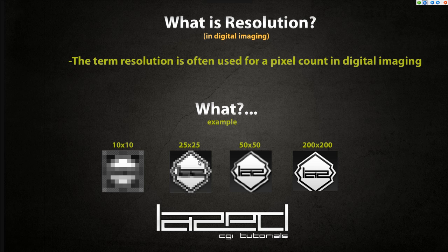Pixelated is a term they use when you can start to see the pixels and it looks fairly ugly — it's not a good look in graphics. So you want to keep your resolution really high so that your image does not become pixelated and looks as clean as possible. If I turn my resolution up to 50 pixels by 50 pixels, my logo becomes fairly sharp, more visible, cleaner and nicer — you can hardly see the pixels. And then if I increase my resolution to 200 by 200 pixels, my image becomes very sharp and very clean looking — you can't see the individual squares that are building up the image at all.